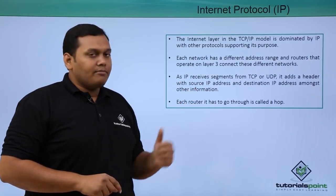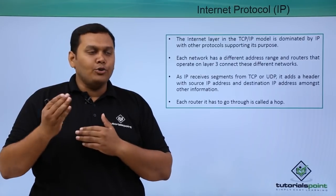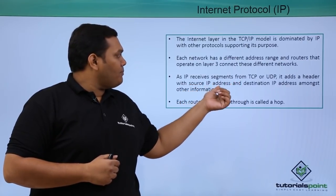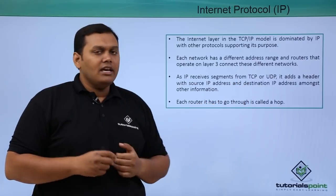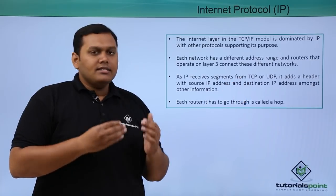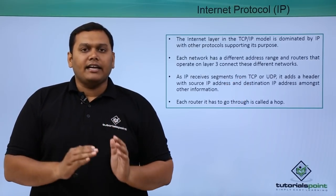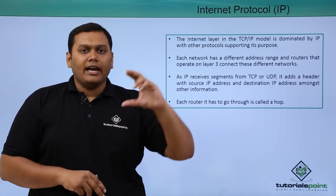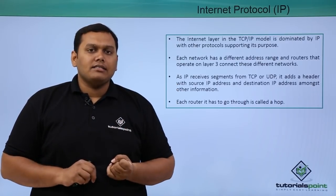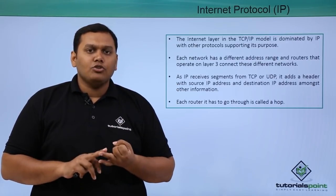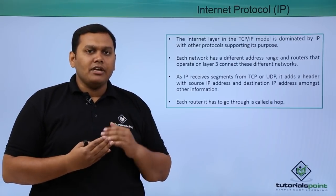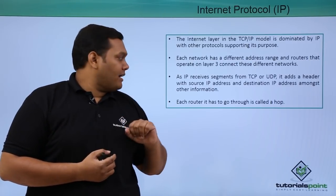As IP receives a segment from TCP or UDP, it adds a header with the source IP address, destination IP address, and other information. TCP/IP sends data as segments with header details, and those header details consist of source and destination IP addresses so that data can be forwarded to the correct destination.